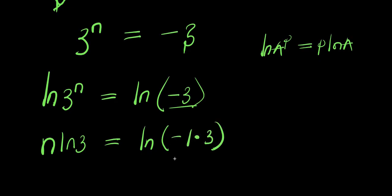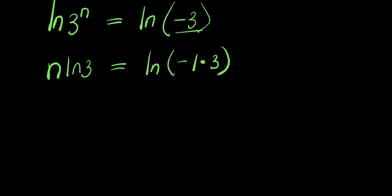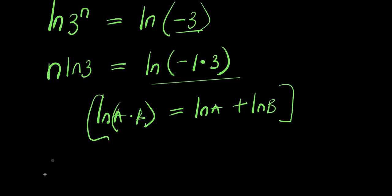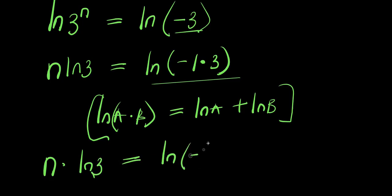If you have natural log of a times b, this equals natural log of a plus natural log of b. Applying that here, I have n times natural log of 3 equals natural log of negative 1 plus natural log of 3.